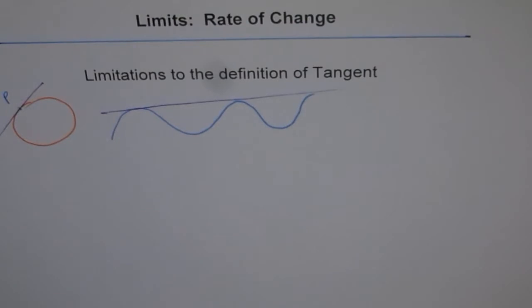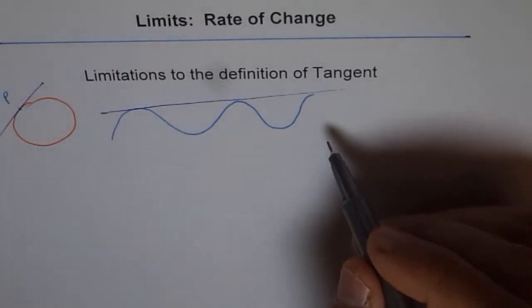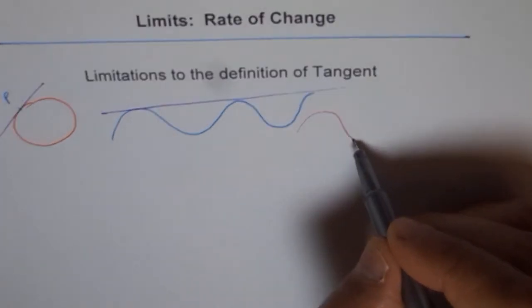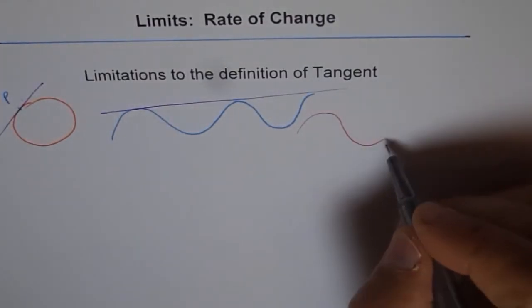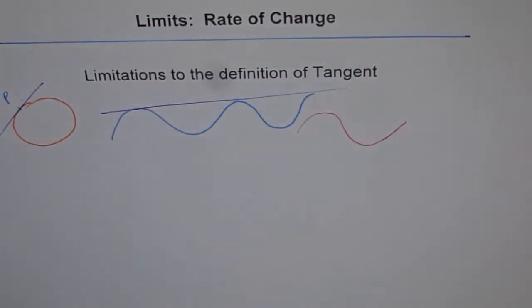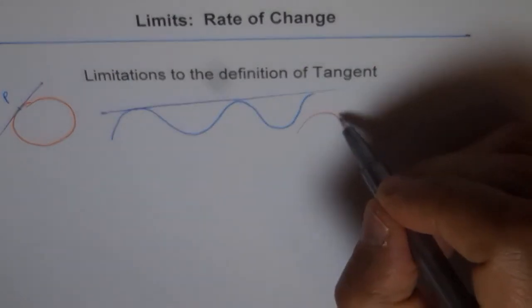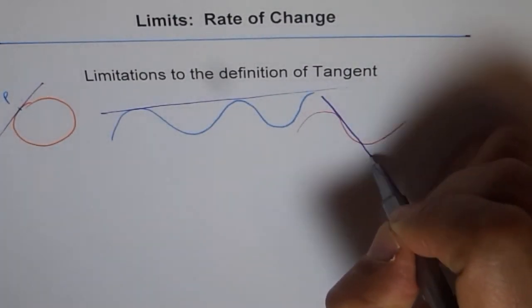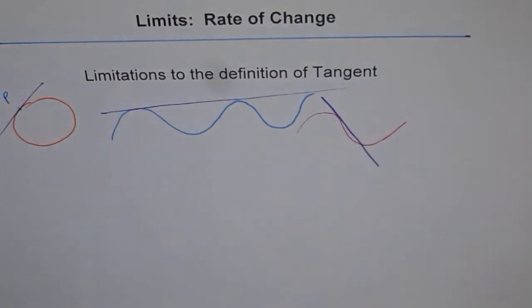Even if it is not a sine function, let me draw another function for example. So for example, if I draw like this, and extend it kind of, then in that case, if I draw a tangent here, then that line may touch this curve at different point.